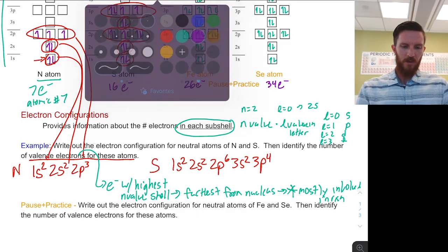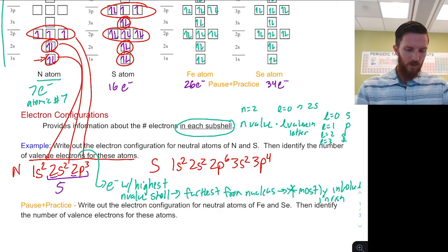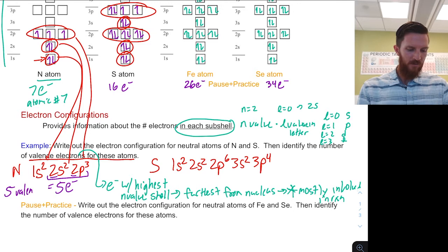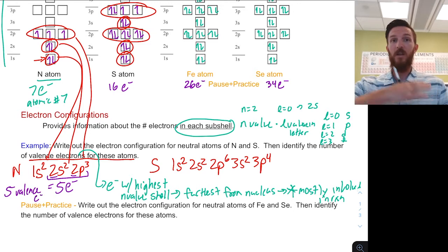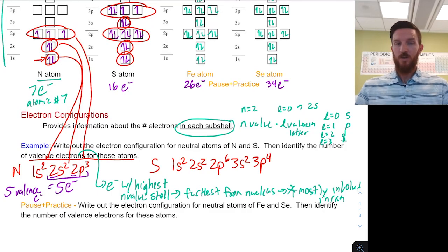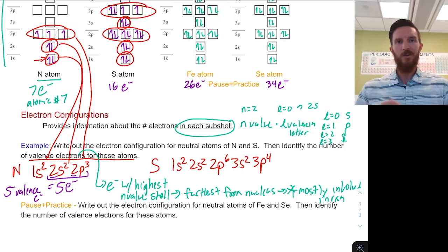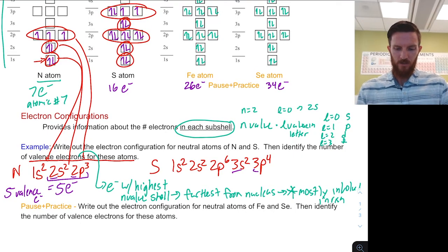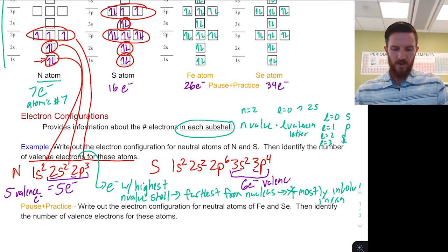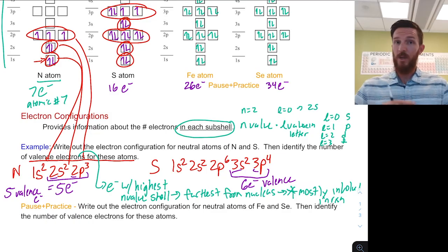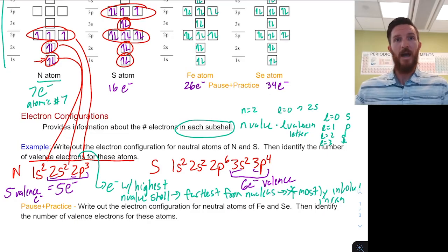For the nitrogen atom, n equals 2 is our largest n value, and we have a total of five electrons in that n value, so nitrogen has five valence electrons. For the sulfur atom, n equals 2 is not the highest — we have n equals 3. Those six electrons in the 3s and 3p are our valence electrons. The number of valence electrons depends on the specific atom.